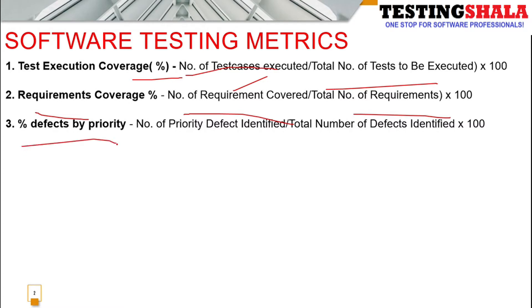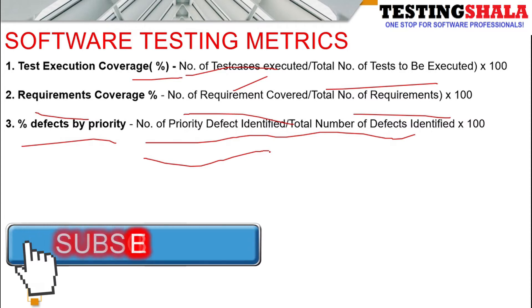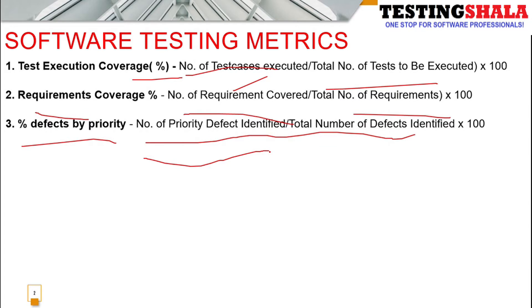The third metric is percentage defect by priority. This helps us understand what percentage of defects belong to priority one, priority two, or priority three. The formula is: number of defects identified at a given priority divided by total number of defects. For example, if we have 10 priority-one defects out of 100 total, that's 10%. If we have 40 priority-two defects, that's 40% of defects classified as priority two.